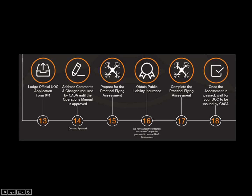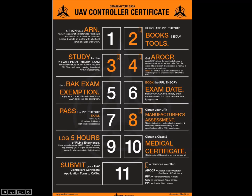You can then operate commercially as a company using remotely piloted aircraft. At RPAS we offer a very streamlined way to get you through that process, taking you from Step 1 all the way through to Step 18 as quickly as possible. Now let's look at the UAV controller certificate steps — 11 steps in total, a little bit easier since this is for the individual. We'll go through these one by one systematically.